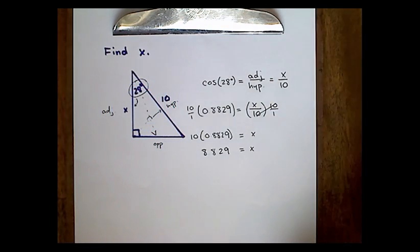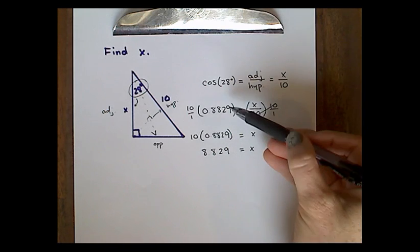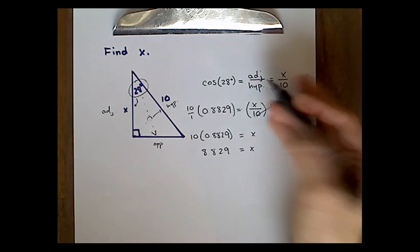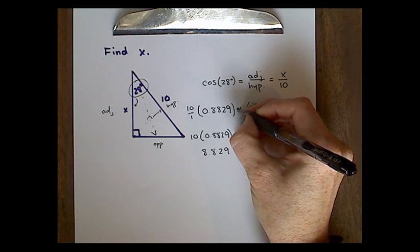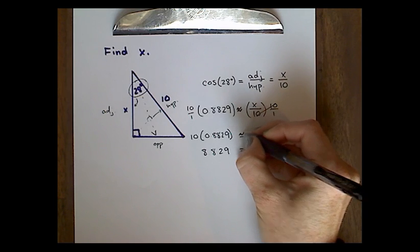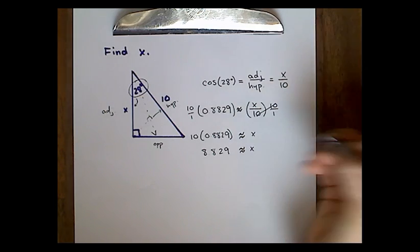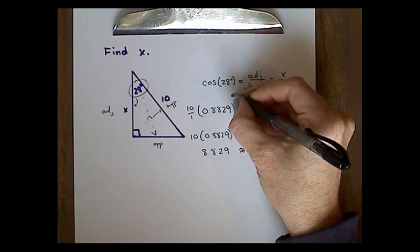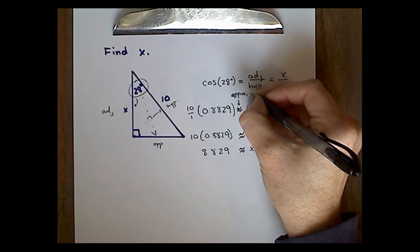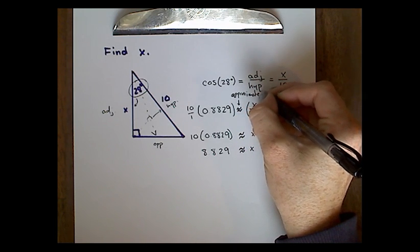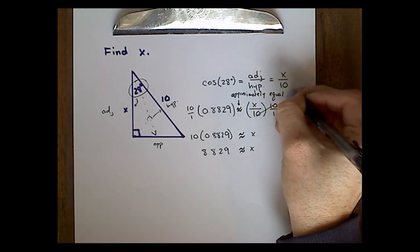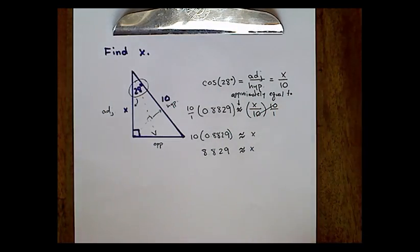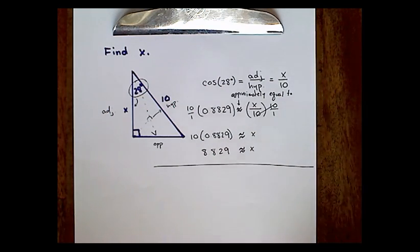Now, how many decimal places should you carry? We'll talk about that later. What's more important right now is that once you start rounding and using your calculator, you need to use the approximately equal to sign — the double squiggly sign — instead of the equal sign. Because once you start rounding your ratio values, you no longer have an exact answer. So we change our equal signs to approximately equal to be thorough with our representation.